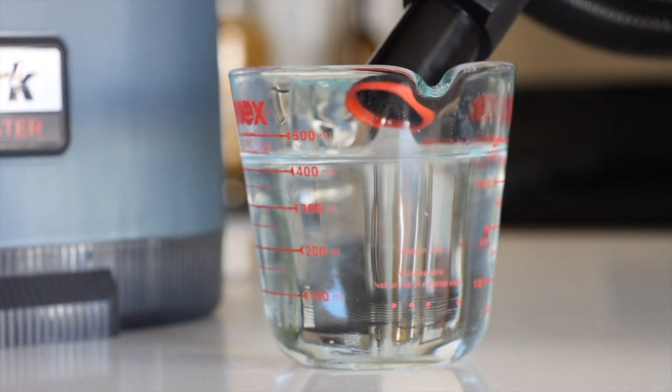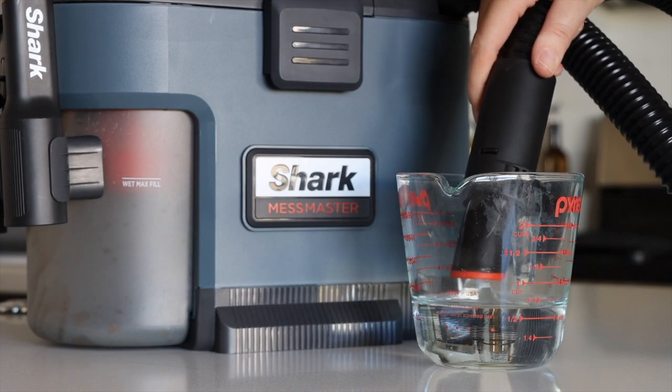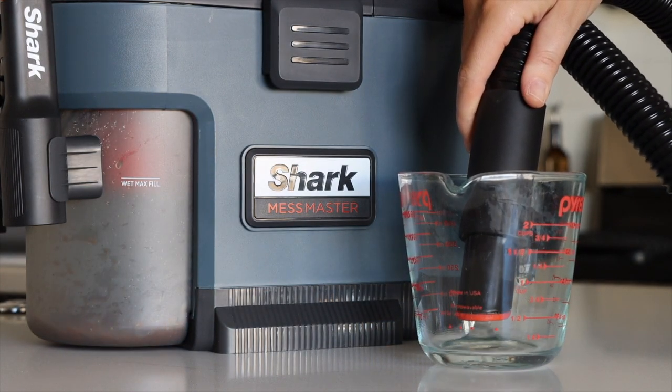After cleaning up a wet or organic mess, run a rinse and ready cycle by vacuuming up a cup of water to flush the system.